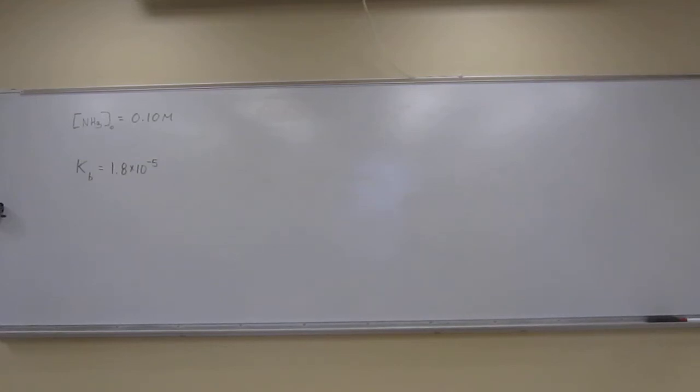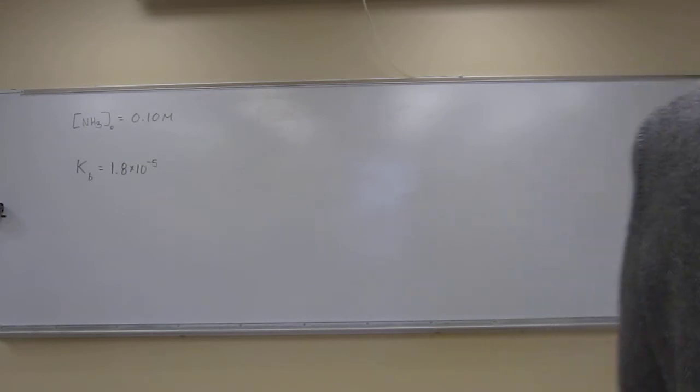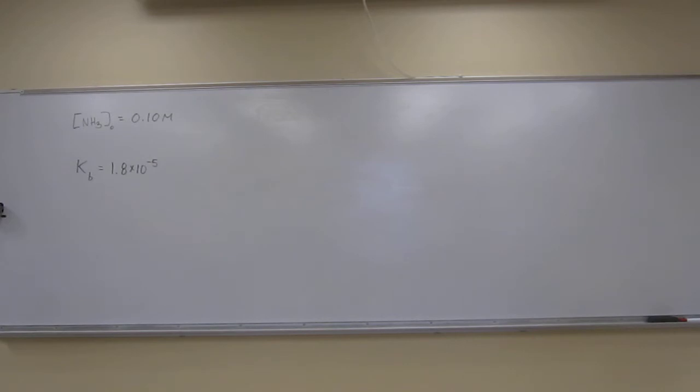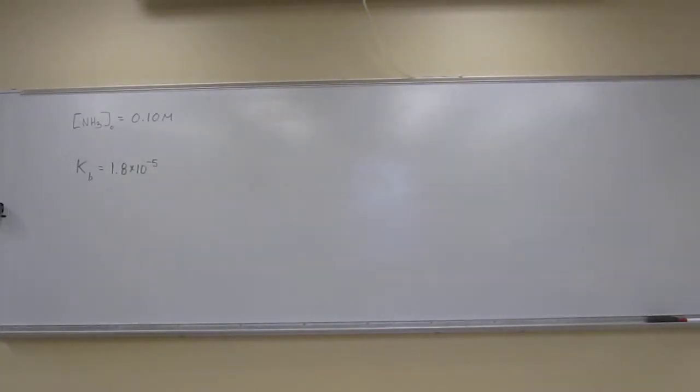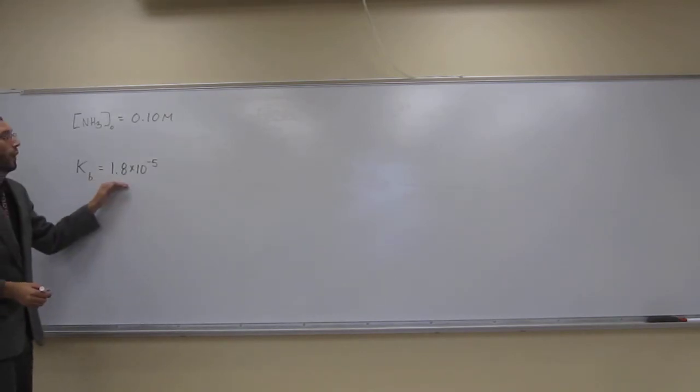Let's do another one of these calculate pH equilibrium problems. So this one says calculate the pH for the following solution, a 0.10 molar ammonia solution. We went and looked up the Kb on the Kb table that we had in our book, and it ended up being 1.8 times 10 to the negative 5.